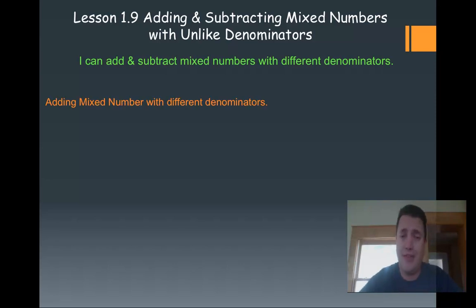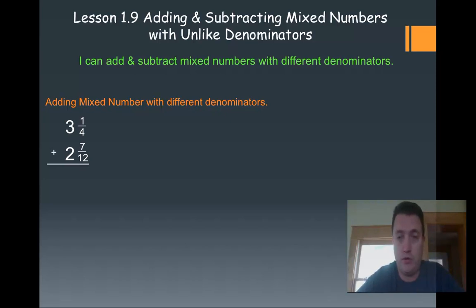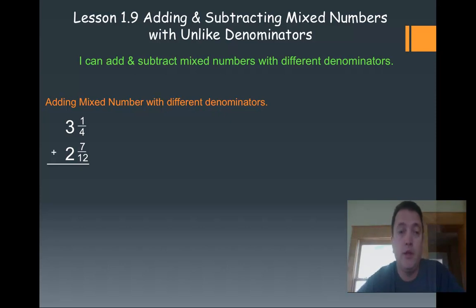We're going to start with adding mixed numbers with different denominators. As you can see here, I've got 3 and 1 fourth plus 2 and 7 twelfths. I can't do anything with those right now because they don't have a common denominator. Remember, common denominator—very important.